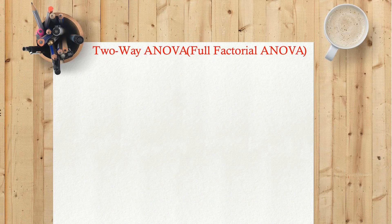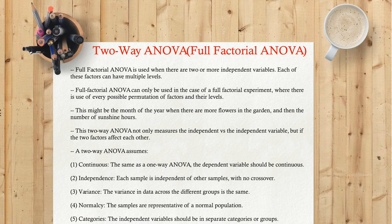Two-way ANOVA, full factorial ANOVA. Full factorial ANOVA is used when there are two or more independent variables, each of which can have multiple levels. Full factorial ANOVA can only be used in the case of a full factorial experiment, where there is use of every possible permutation of factors and their levels. For example, this might be the month of the year when there are more flowers in the garden, and then the number of sunshine hours. This two-way ANOVA not only measures the independent versus the dependent variable, but also whether the two factors affect each other.